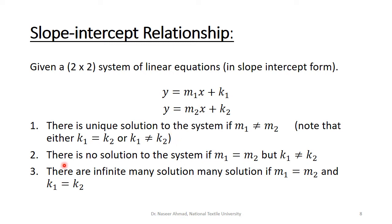The second possible solution type is no solution. To check this, put equations in slope-intercept form. There is no solution to the system if m1 equals m2 and k1 is not equal to k2 — that is, slopes are equal and intercepts are different. When slopes are equal and intercepts differ, the lines are parallel, and parallel lines have no intersection, so there is no solution.